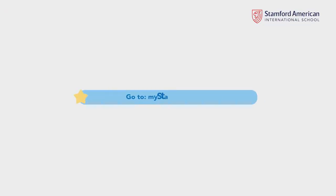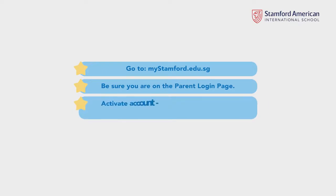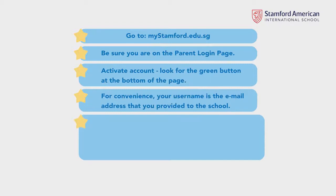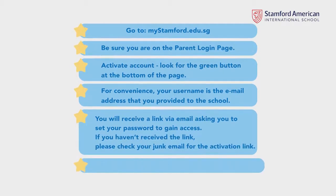Go to mystamford.edu.sg. Be sure you are on the Parent Login page. Look for the green Activate Account button at the bottom of the page. Your username is the email address that you provided to the school. You will receive a link via email asking you to set your password to gain access. If you haven't received the link, please check your junk email for the activation link.